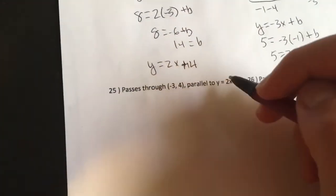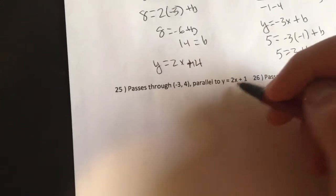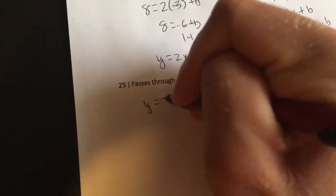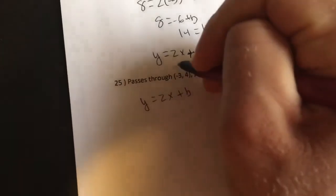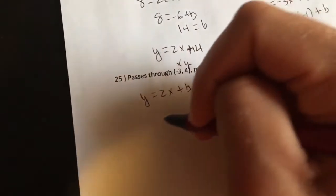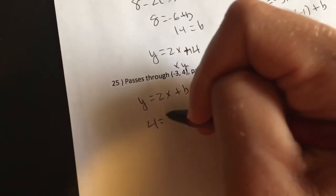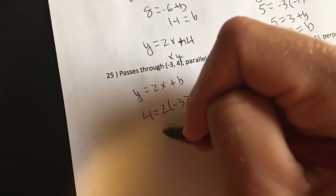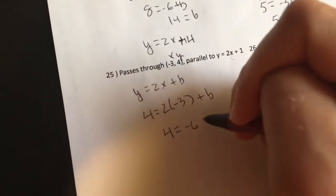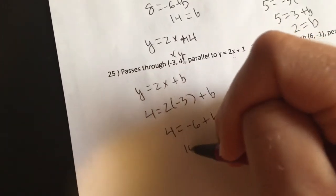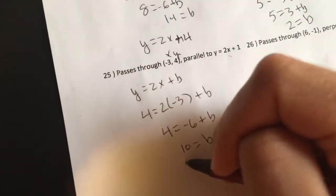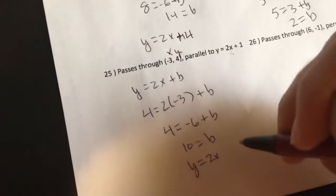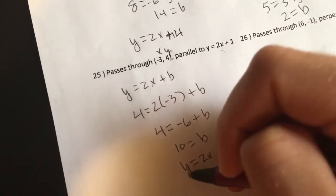All right, if it's parallel to this, remember, parallel lines have the same slope. So Y equals 2X plus B, and I go through negative 3, 4. Well, 4 is my Y value. Negative 3 is my X value. So 4 is equal to negative 6 plus B. Add 6 to both sides. B is 10. So Y equals 2X plus 10 is my equation.